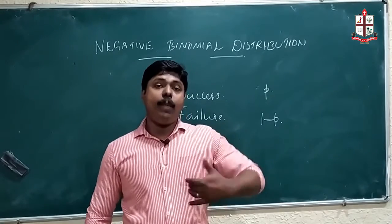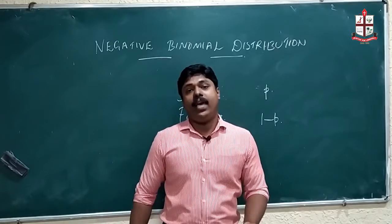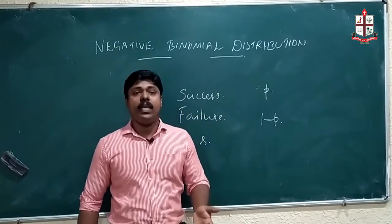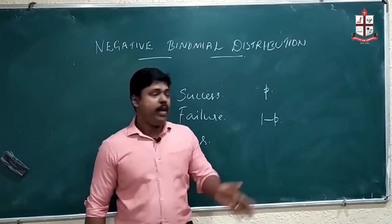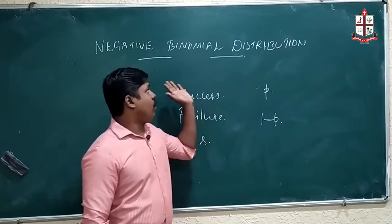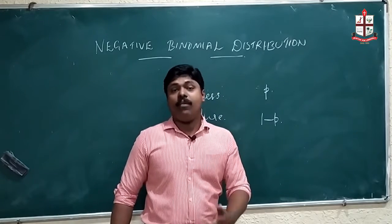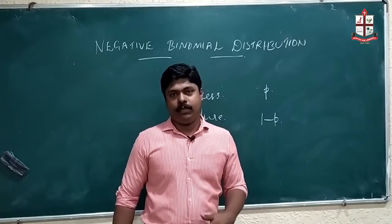In binomial distribution, the number of trials — the number of repetitions of the experiment — is constant. But in the case of negative binomial distribution, the number of trials is a variable; it is not a constant.